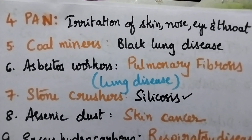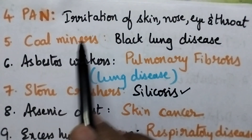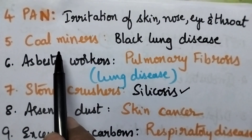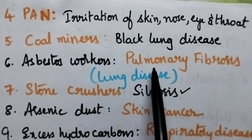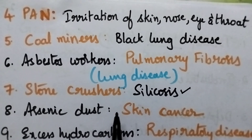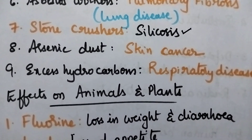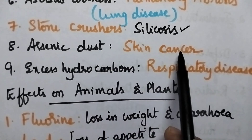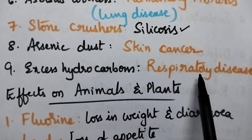PAN, peroxyacetyl nitrate, causes irritation of skin, nose, eye and throat. Workers of coal mines suffer from black lung disease. Asbestos workers will suffer from pulmonary fibrosis, which means they suffer from a lung disease. Stone crushers will suffer from silicosis. People working with arsenic are exposed to large amounts of arsenic dust, which causes skin cancer. Whenever people are exposed to excess hydrocarbons, it causes respiratory diseases.